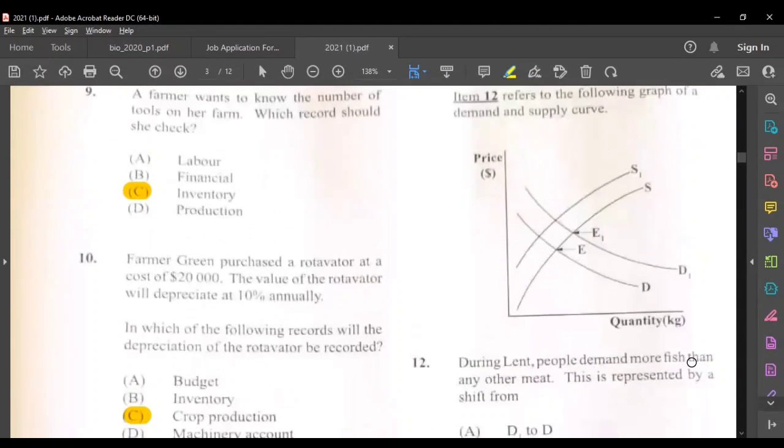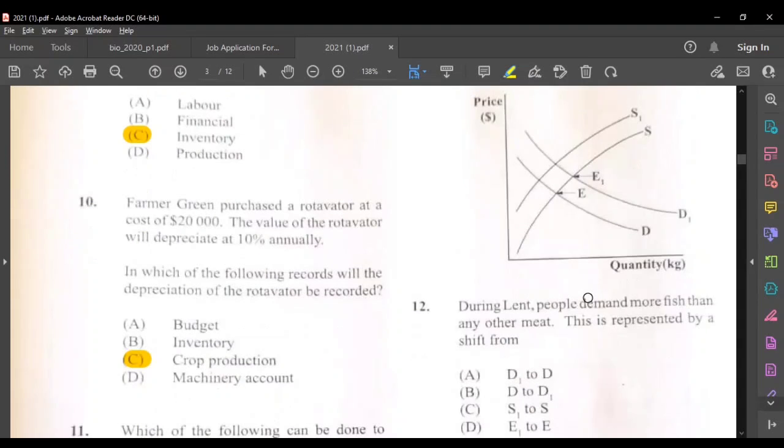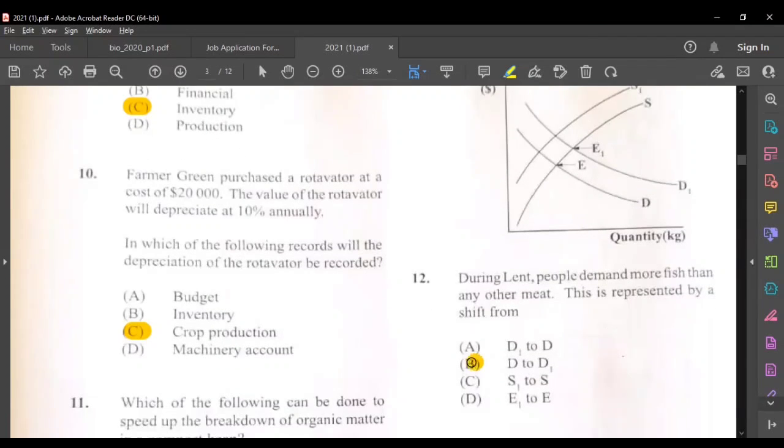Question twelve, during Lent people demand more fish than any other meat and this is represented by a shift from. This question has been repeating itself for a number of years. The answer would be a shift from D because the demand is increasing. It will move from D to D1. D represents demand. So this answer would be B.